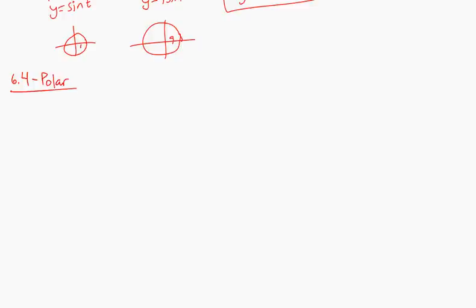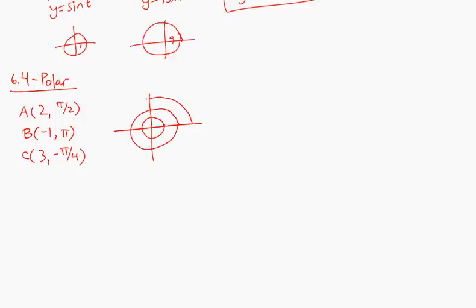Let's say I gave you a point of (2, π/2), and another one of (-1, π), and a third one of (3, -π/4). So you feel comfortable plotting the points in the polar graph. We go in the direction of π/2, which is right here, and then we go 2 units out, so that's A.